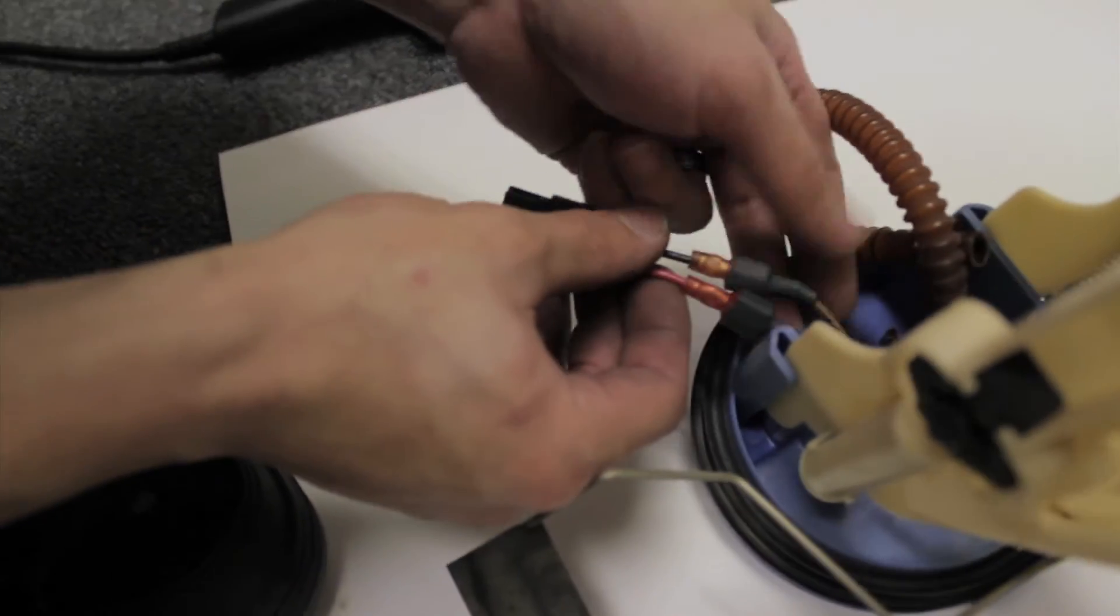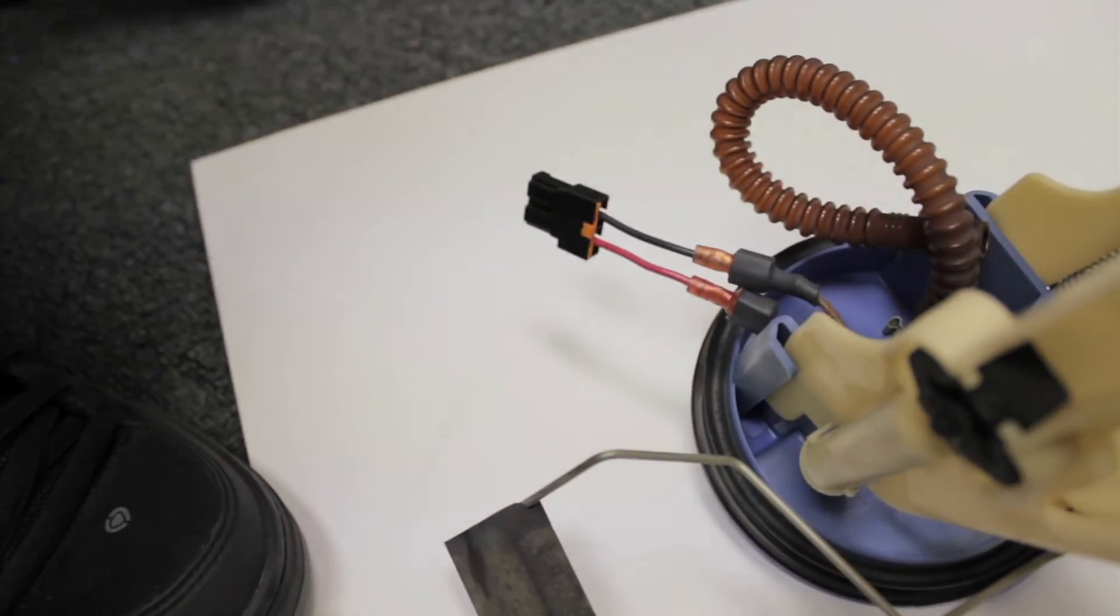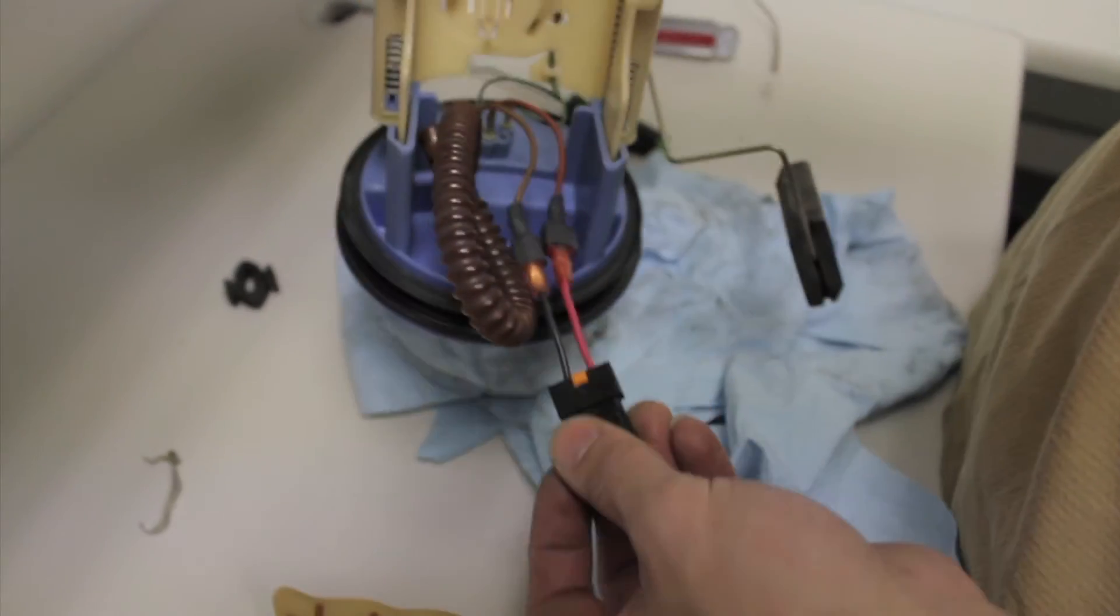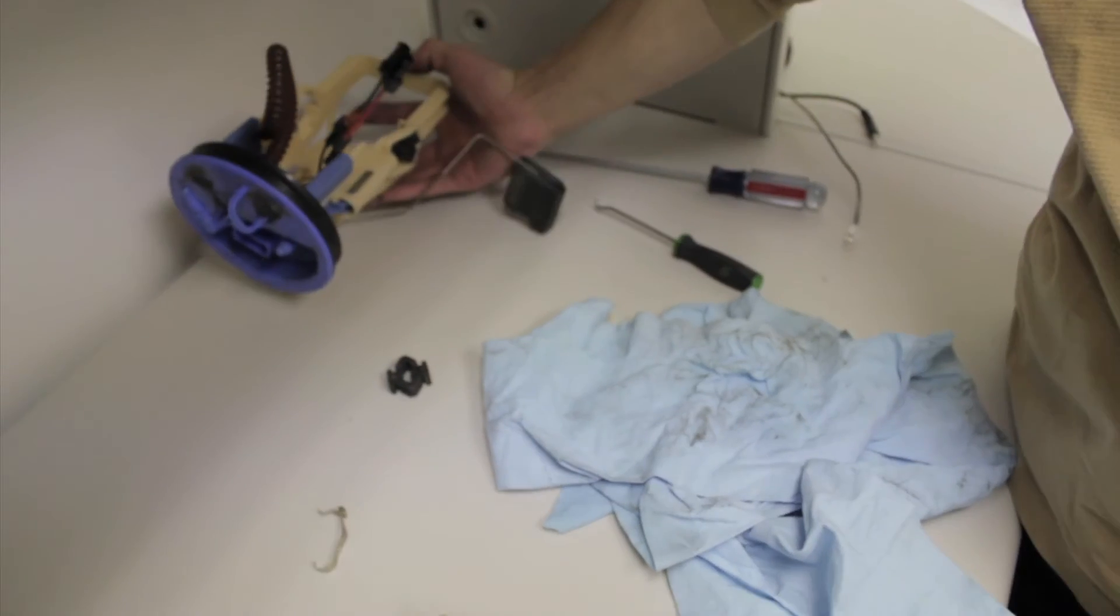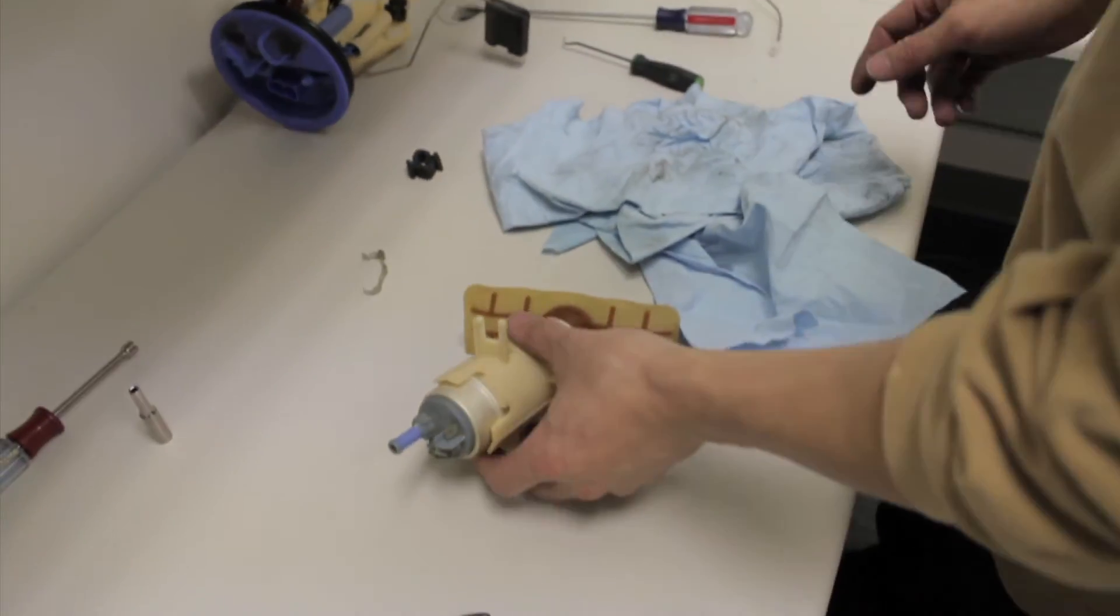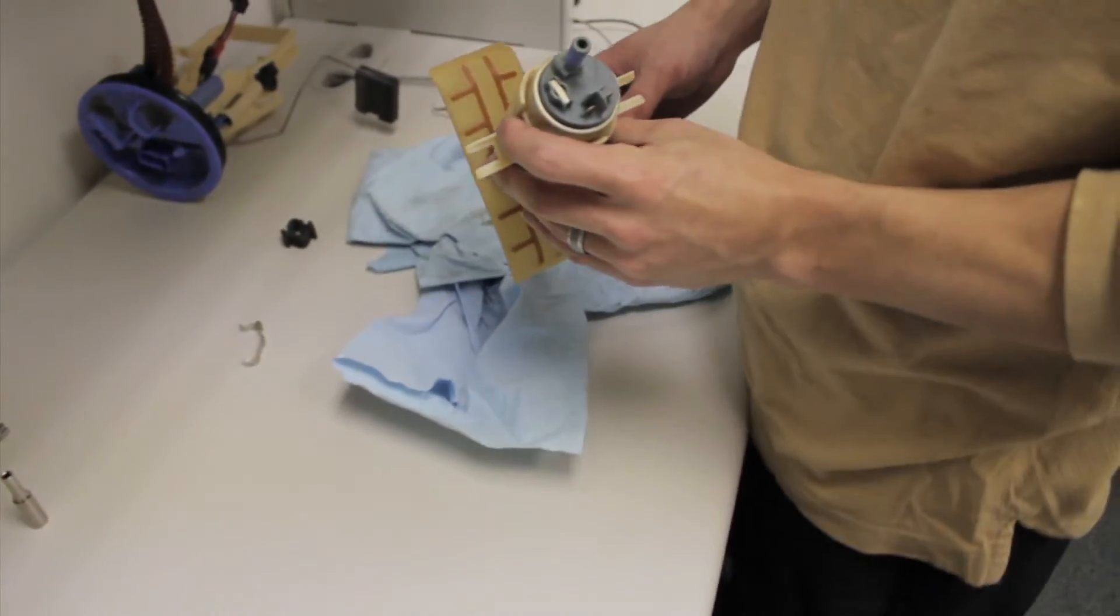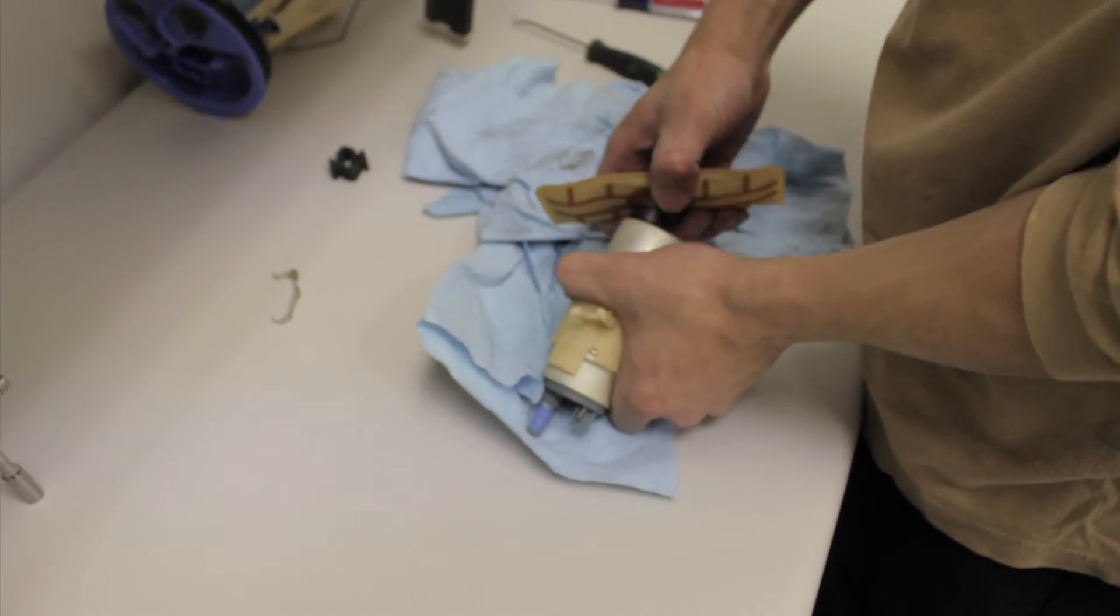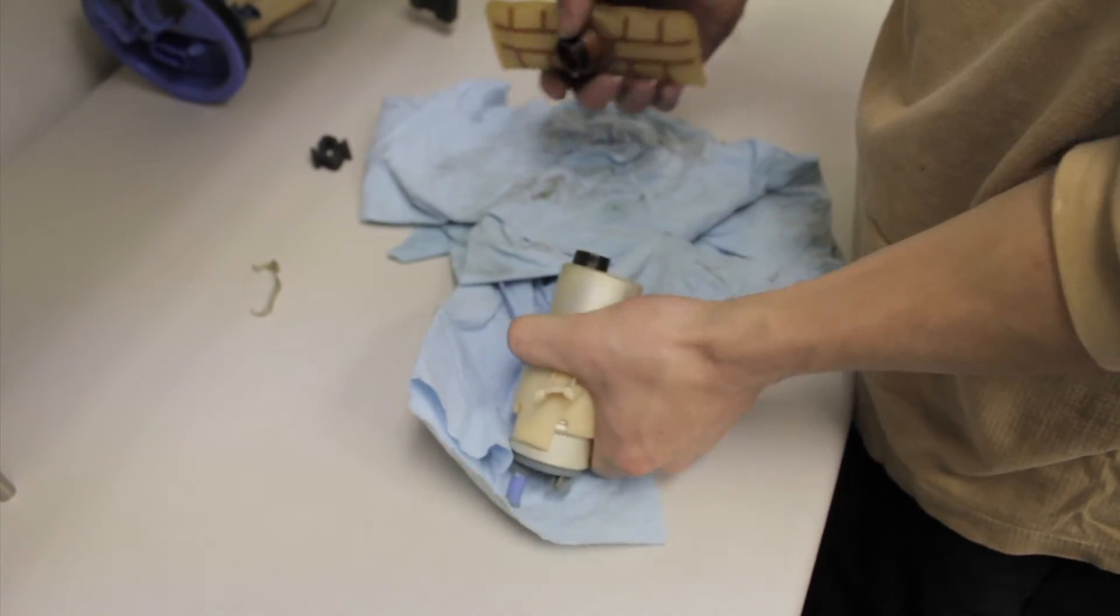All right, we are all set here. So now that the wiring is heat shrunk, we can set that aside and work on the pump assembly. The pump actually comes out quite simply. All you have to do is grab the sock, give it a little twist, and it will come off the bottom of the pump.